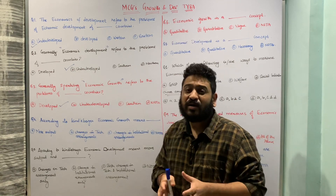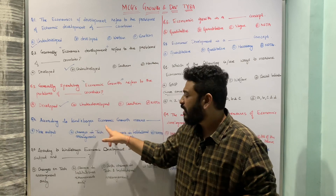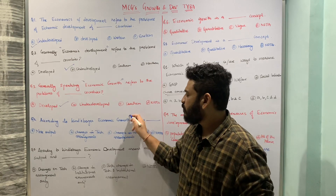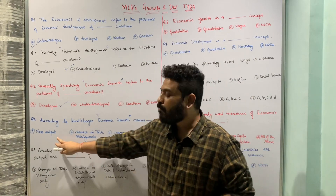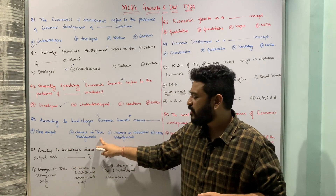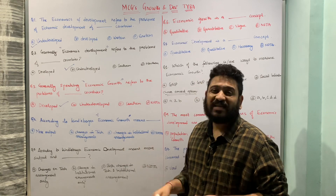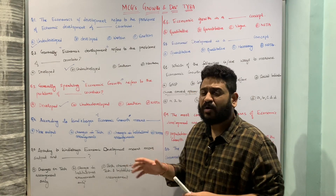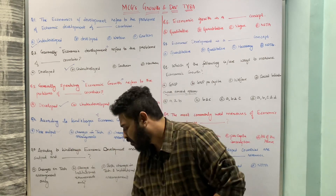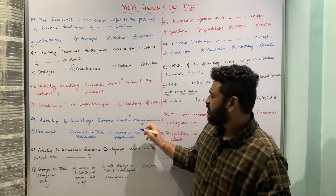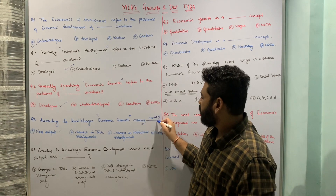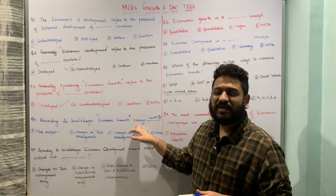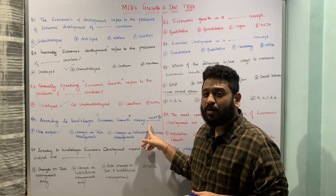The next question: 'According to Kindleberger, economic growth means ___.' The options are: more output, changes in technological arrangements, changes in institutional arrangements, or none of the above. According to Kindleberger, economic growth purely relates to more output — an increase in output — so option A, more output, is the correct answer.